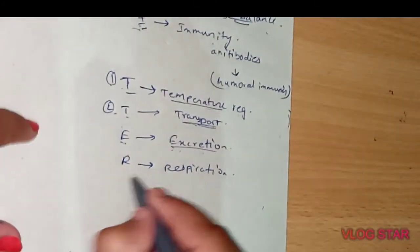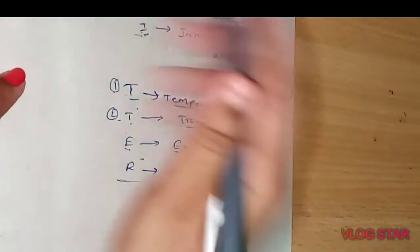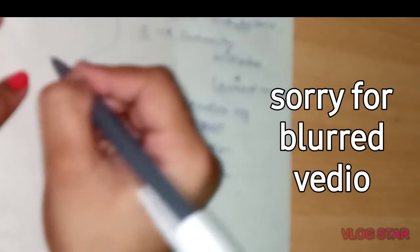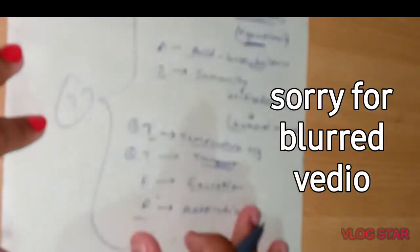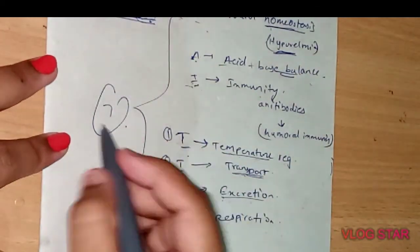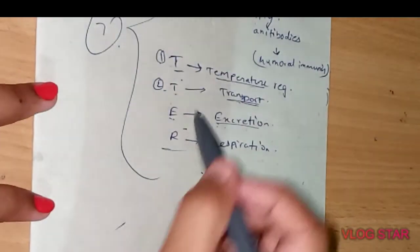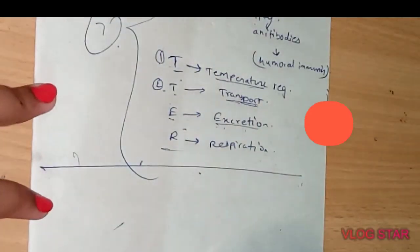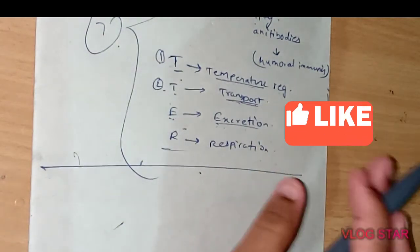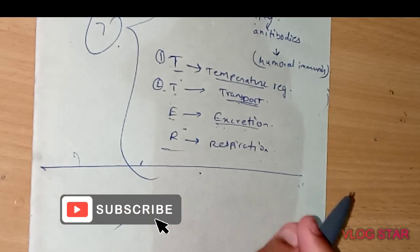So WAITTER - all these seven functions can be remembered by this easy and simple technique. This is about blood. If you like the video, then like and subscribe.